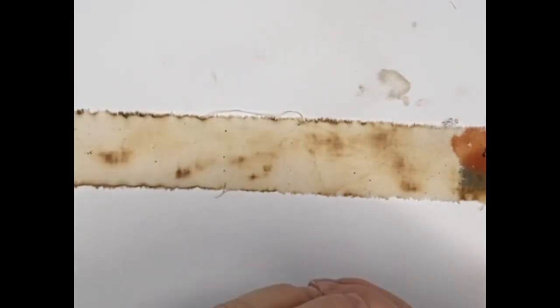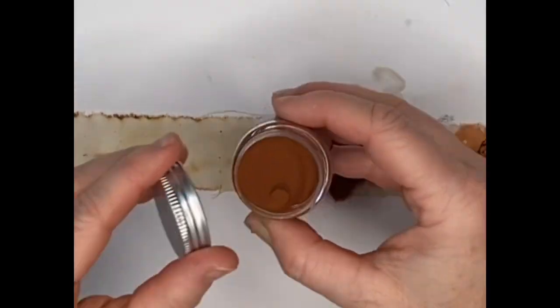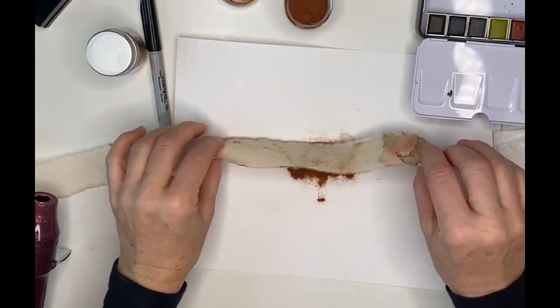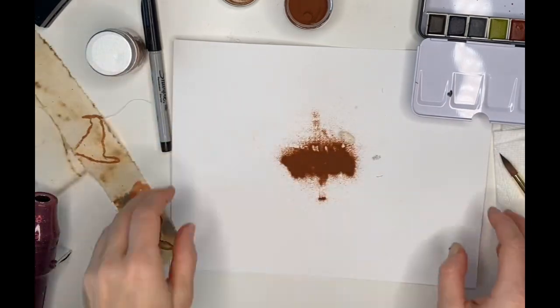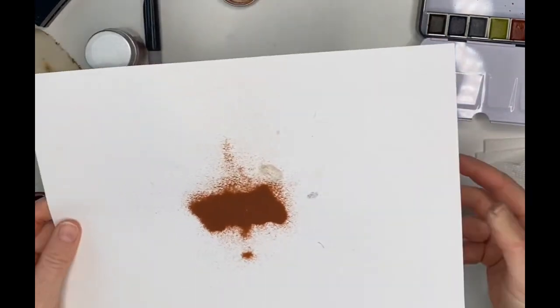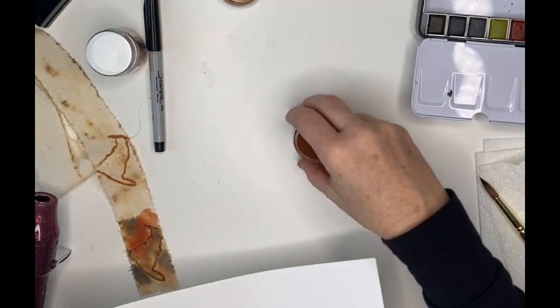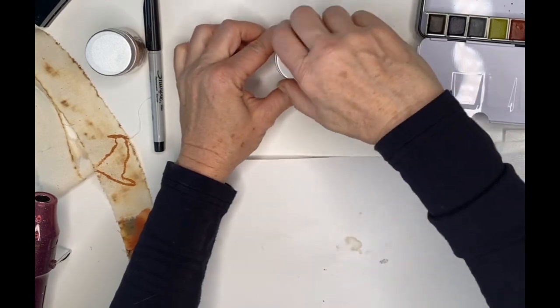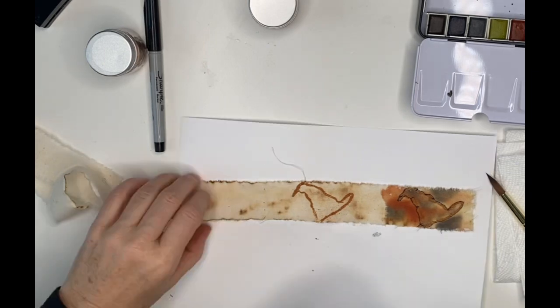I'm going to take the embossing powder and just sprinkle it right on. You'll see here no problem with that. We'll just go ahead and put that away and heat set this embossing powder.